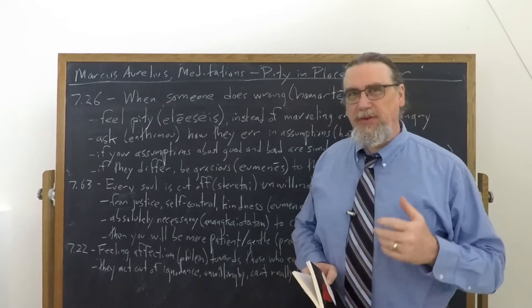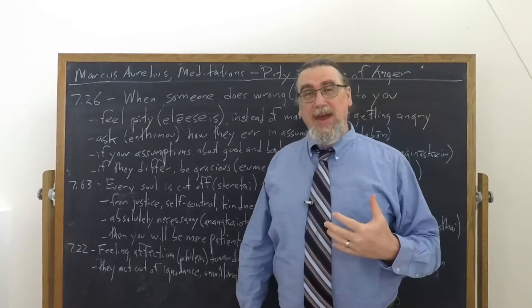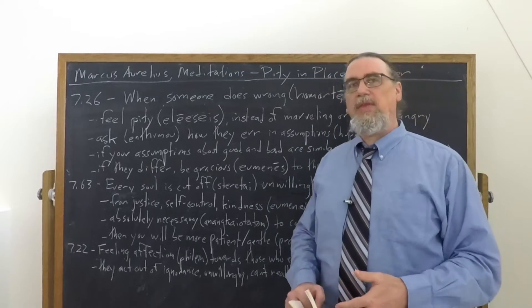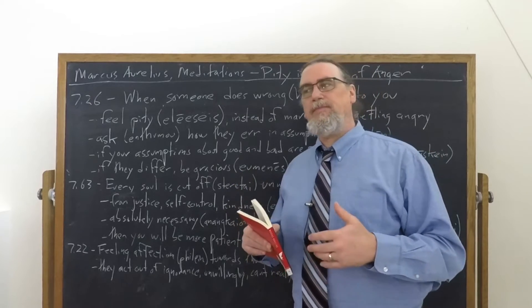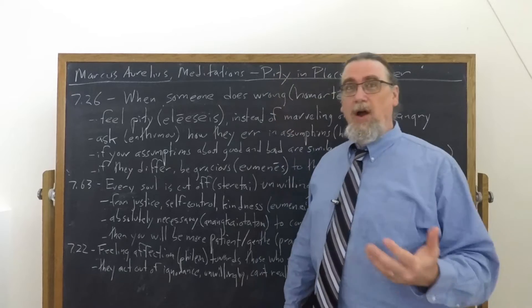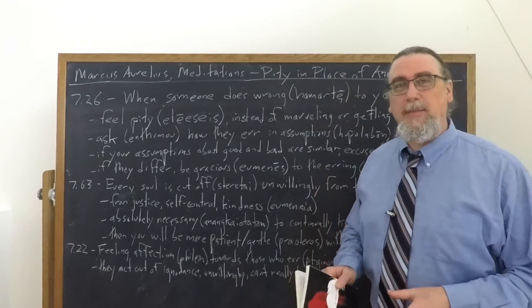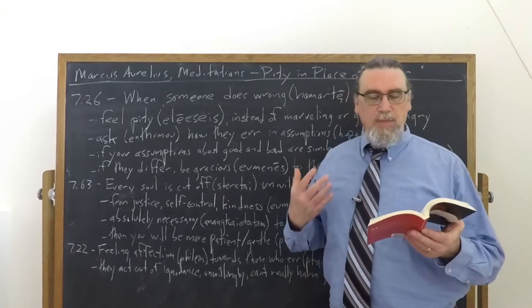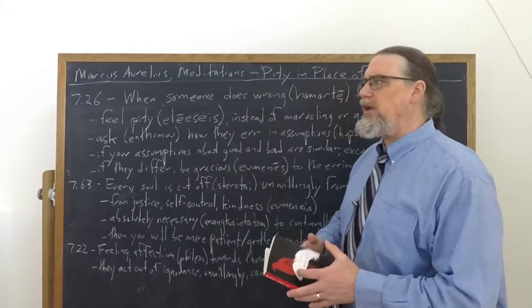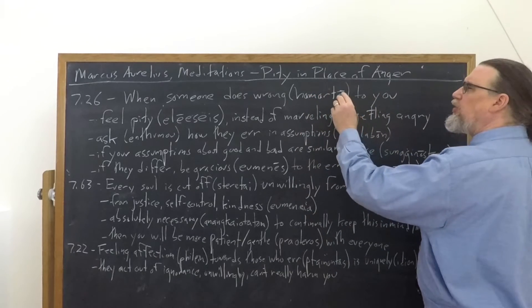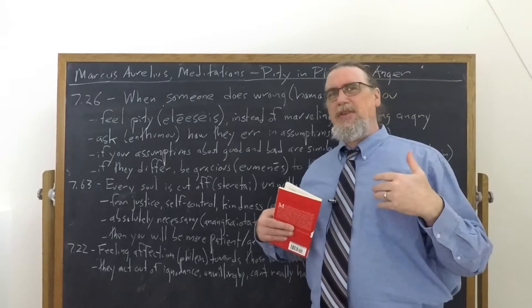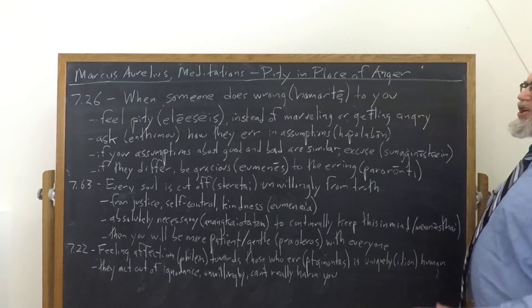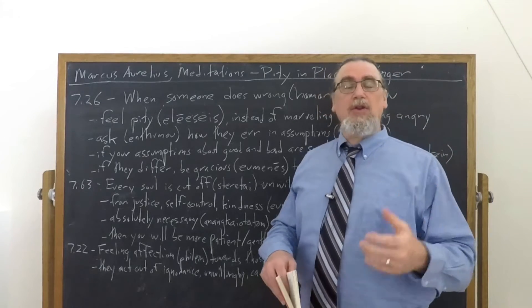There are several passages in Book 7 of Marcus Aurelius' Meditations that have to do with what we could feel instead of getting angry with other people when they screw up or even when they do things that maybe they intend to hurt us. And I think we should start with 26, where when somebody screws up, when somebody does wrong, hamartia, right?